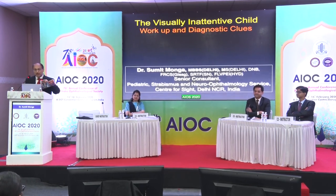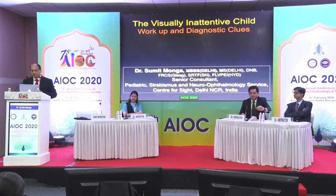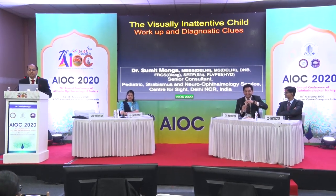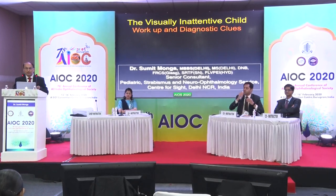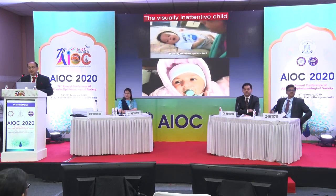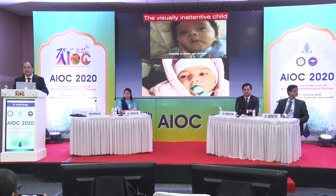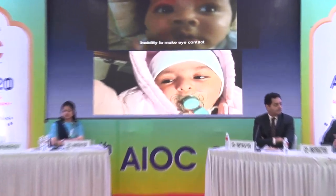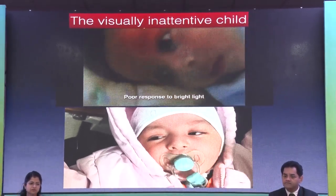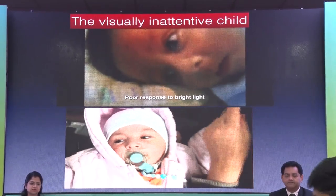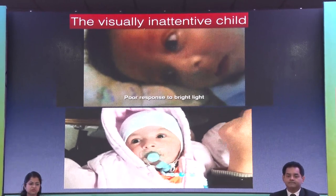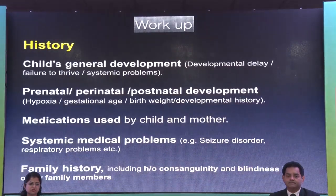I am an ardent learner of pediatric ophthalmology and I'll be talking about systemic workup and diagnostic clues that may help us analyze these children better. A visually inattentive child is basically one who is unable to make eye contact without auditory stimuli. In routine baby testing, such a child is not able to focus on the mother's face and does not really respond to bright light.